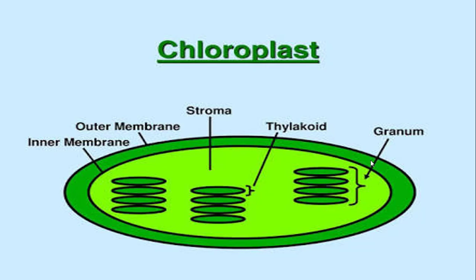Hey students, today we will begin our lesson with the chloroplast. One of the organelles inside the plant cell is said to be plastid. There are three types of plastids: chloroplast, chromoplast, and leucoplast.